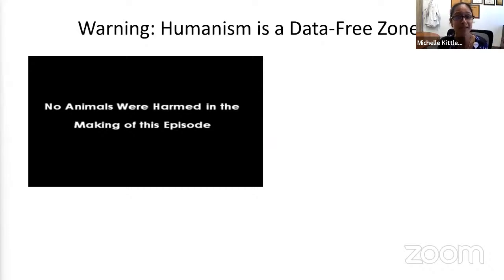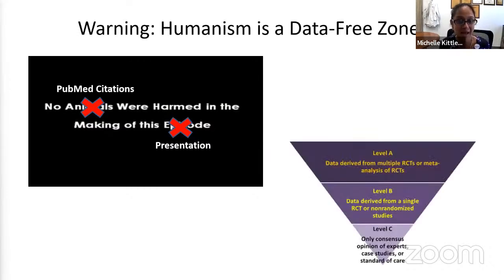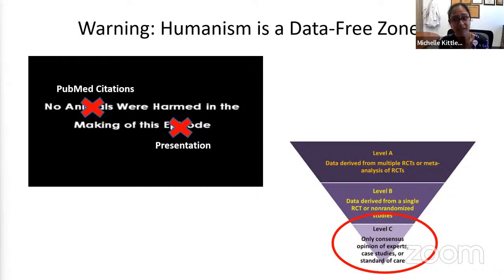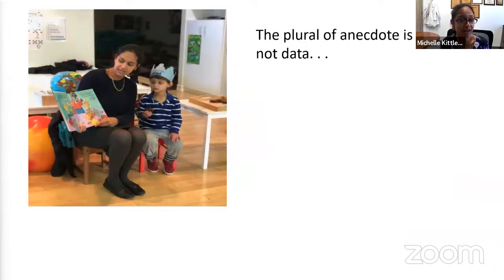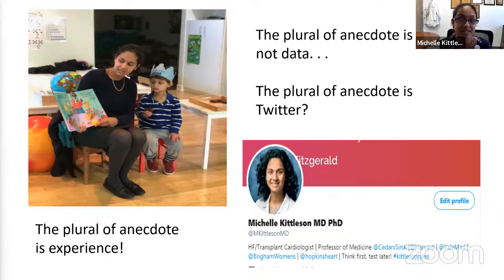It's important to remember that humanism is a data-free zone. No PubMed citations were harmed in the making of this presentation. When we think about levels of evidence — multiple randomized controlled trials, non-randomized registry studies — when I talk about humanism, I'm really talking about consensus opinion of experts, or in my case, my personal experience. You might have heard that the plural of anecdote is not data. Well, I'm going to be sharing a lot of anecdotes — stories about my patients and what I learned from them. Some might say the plural of anecdote is Twitter, but I'd like to say the plural of anecdote is experience.